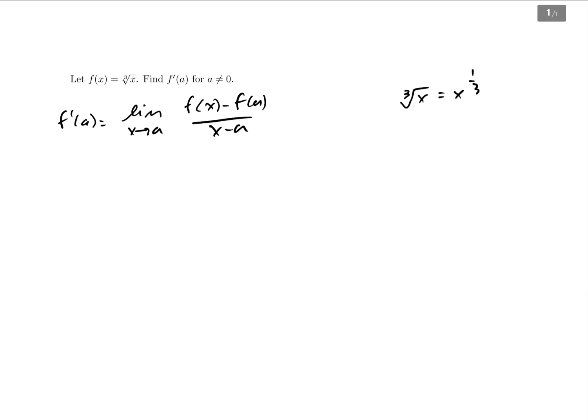So we're looking at this question. We have f of x equals the cube root of x. We want to find the derivative at a for a not equal to zero. To approach this question, the hint being f prime of a, we want to use this derivation of the derivative that we get through looking at secant lines. And here I'm going to use the fact that the cube root of x is x to the one third power.